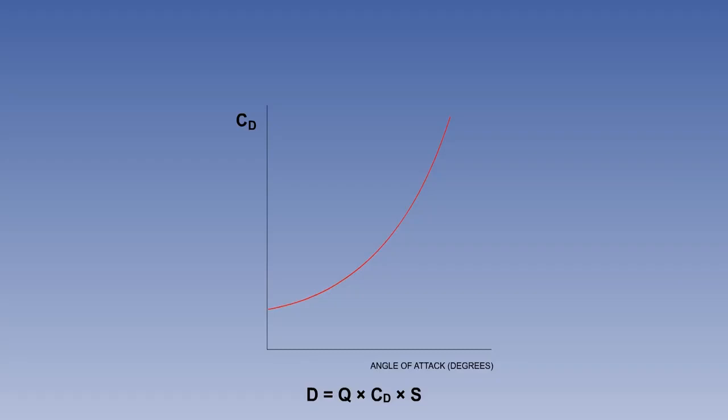If the CD of a representative wing were to be plotted against angle of attack, alpha, the result would typically be a curve as shown on the screen.